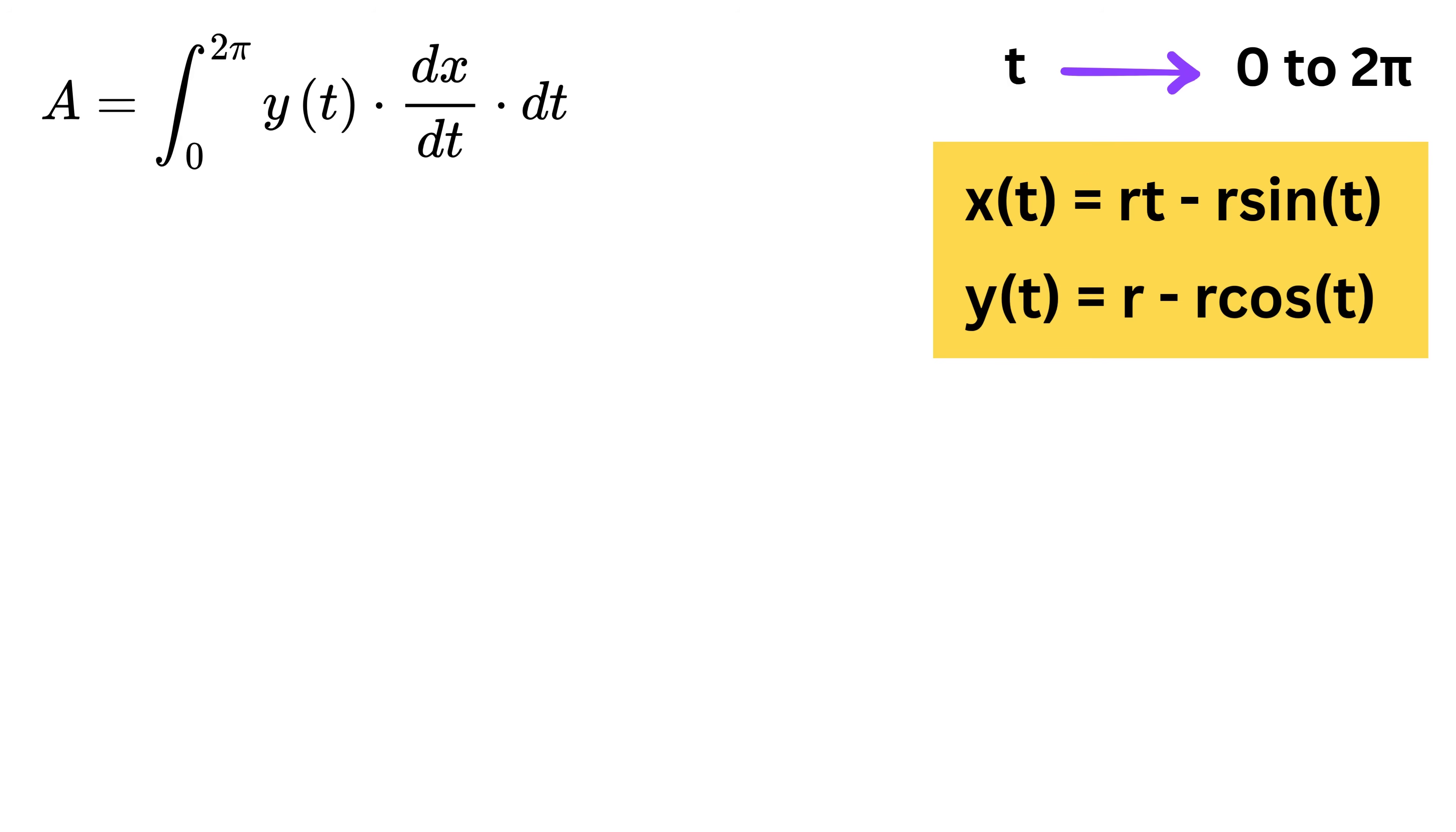Now compute the pieces step by step. Recall x equals RT minus sine of T and y equals R times 1 minus cosine of T.